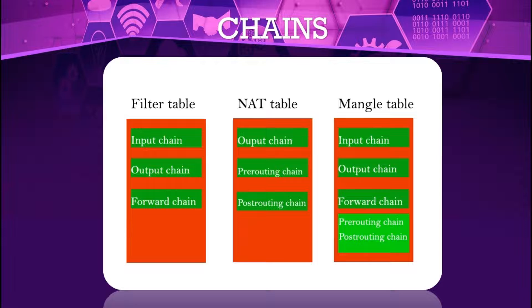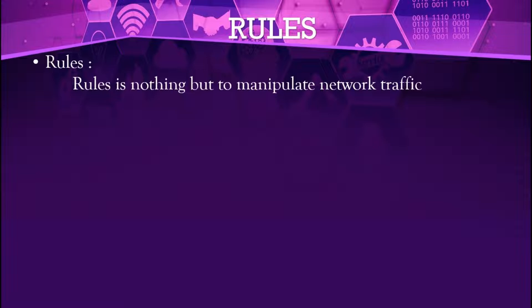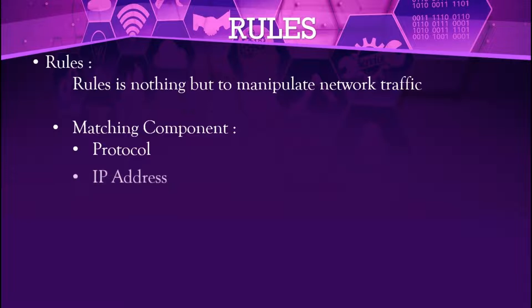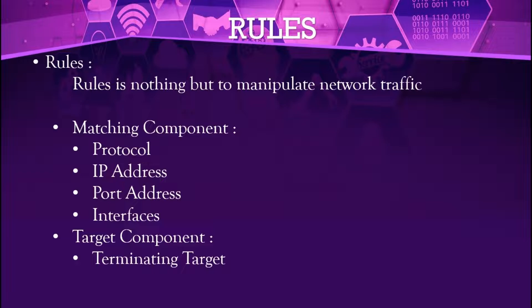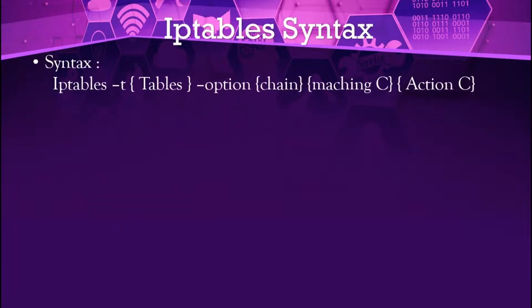Rules are nothing but manipulated network traffic. Rules will match components such as protocol, IP address, port address, interface, and target — which can be terminating or non-terminating. If the protocol, IP address, or port match, then we decide what type of action to take: whether to terminate the connection or continue passing the package through as a non-terminating target.